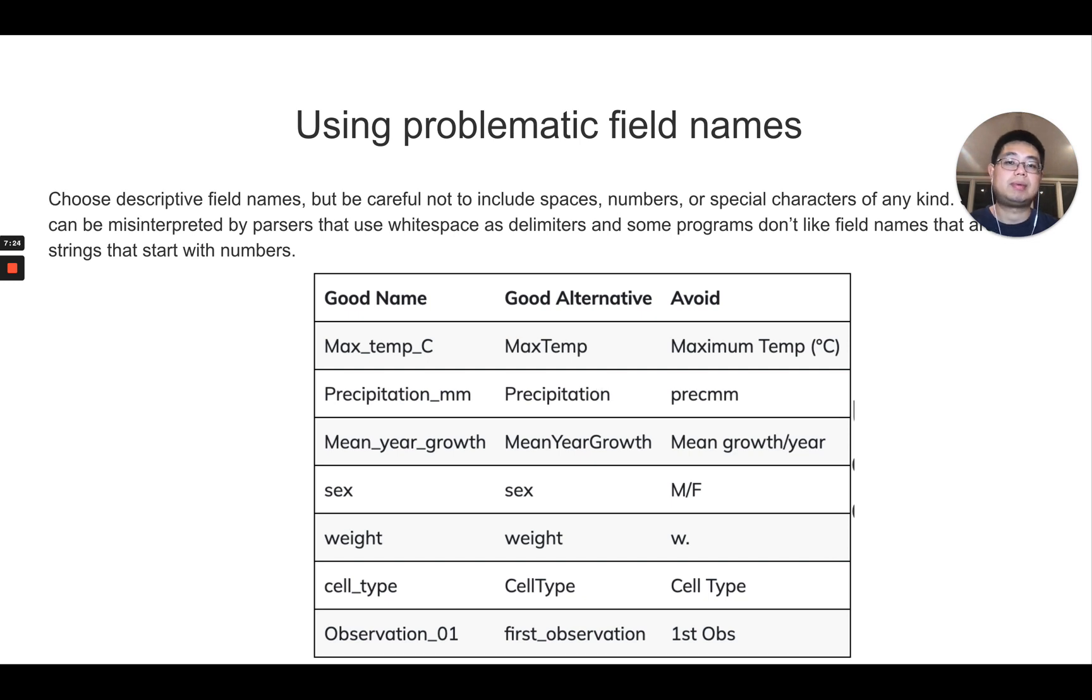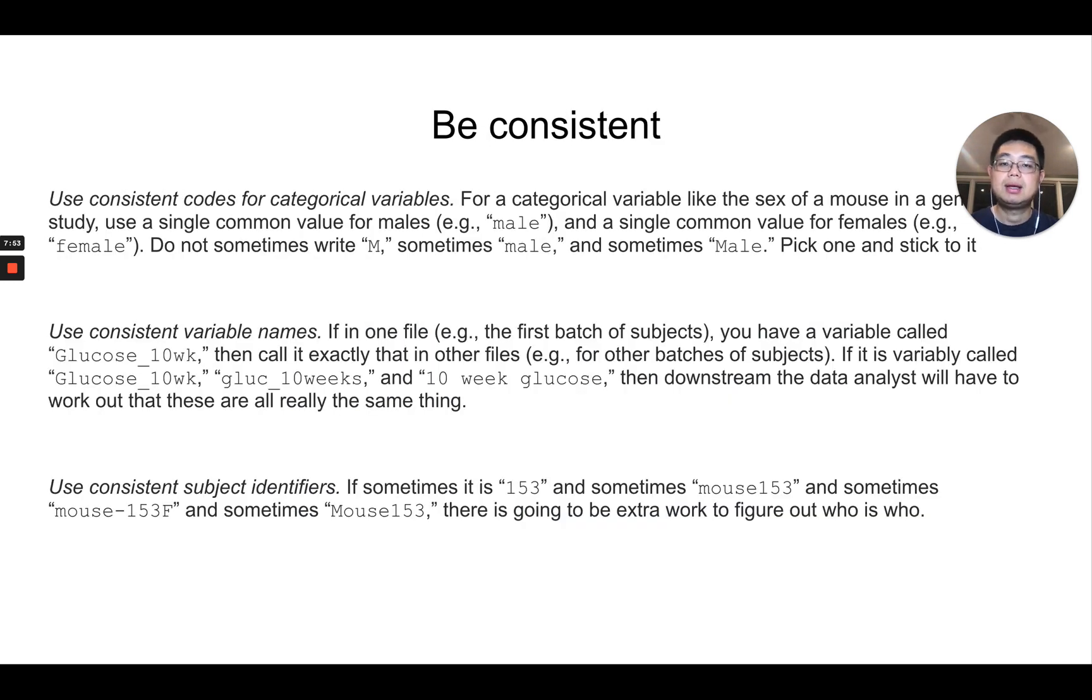Using problematic field names. So when you choose the column names, make sure you use good names like here, use underscore to separate different words. Good alternatives would be like camel cases and avoid using spaces between the words because most programs actually don't like strings with space. And don't use special characters of any kind in the column names.